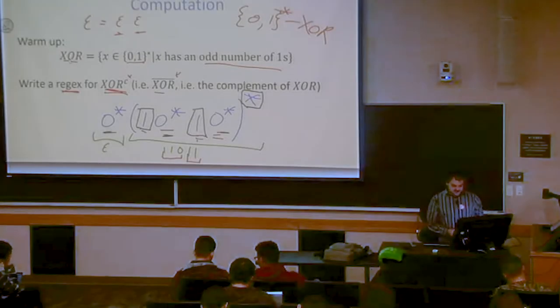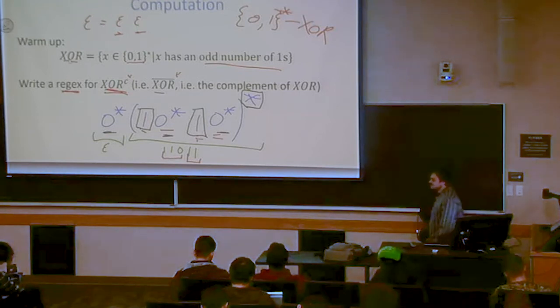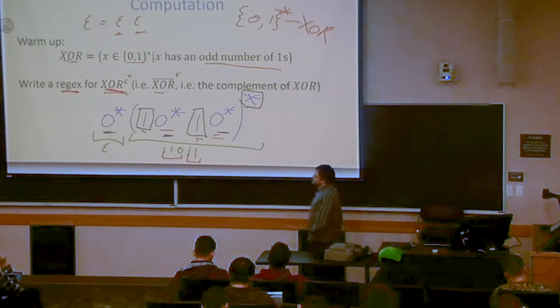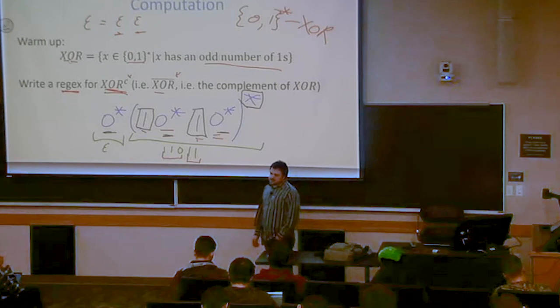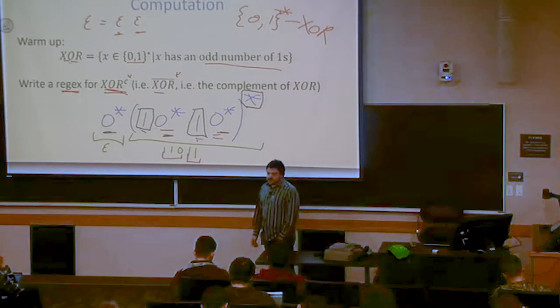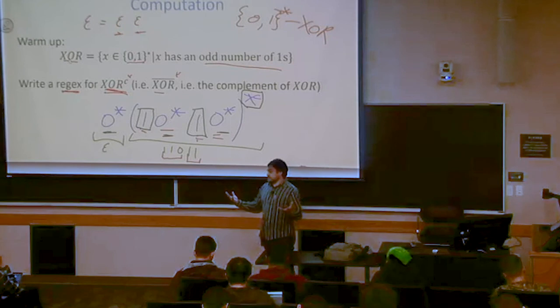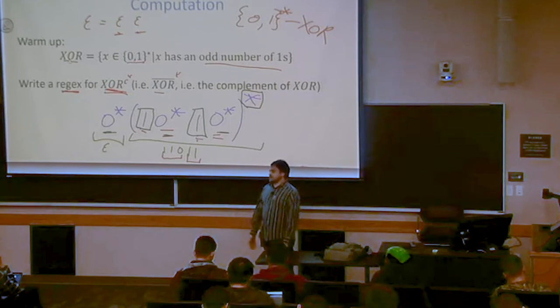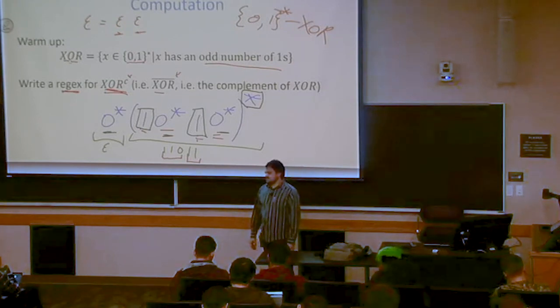So the question was, does the empty set have an infinite number of empty sets inside it? The empty set is empty, so it doesn't have anything inside it at all. But any number of unions of the empty set is going to still just result in the empty set. Does that answer your question? Okay.